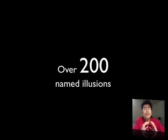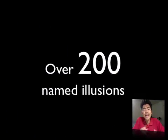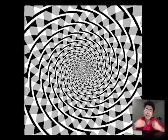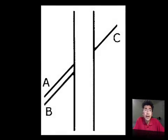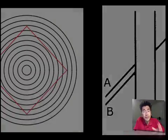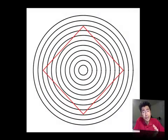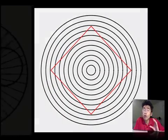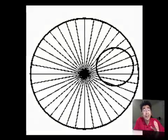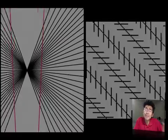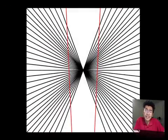There are over 200 named illusions, such as the Harrison spiral, the cross, the Orbison square circle, the Orbison circle circle, the herringbow, and many others.